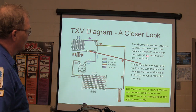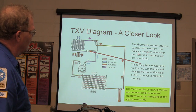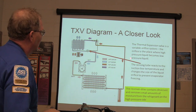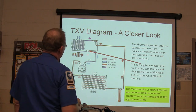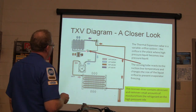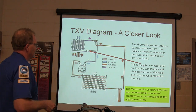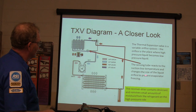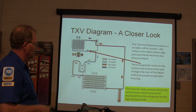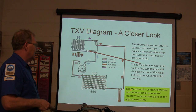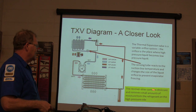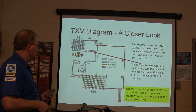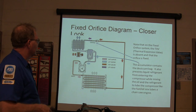The thermal expansion valve is the variable orifice system. The orifice is placed where high-pressure liquid becomes low-pressure liquid, and then it evaporates. The sensing tube reacts to the suction line temperature and changes the size of the orifice to prevent freezing. The receiver dryer contains desiccant to remove moisture from the refrigerant.